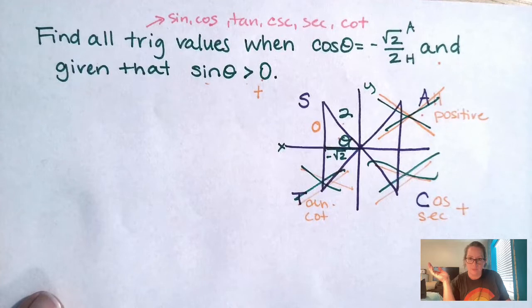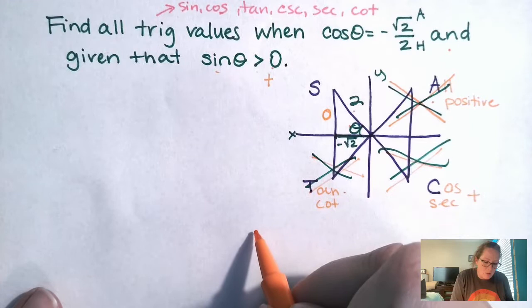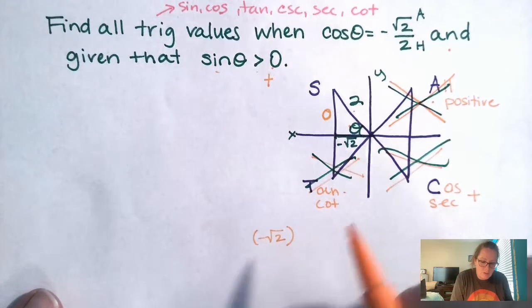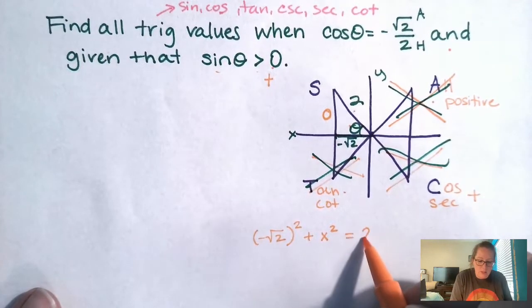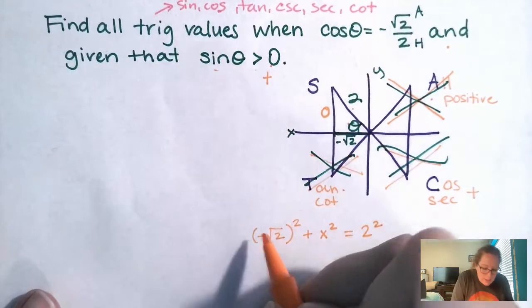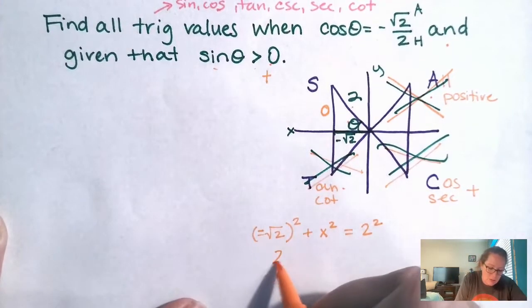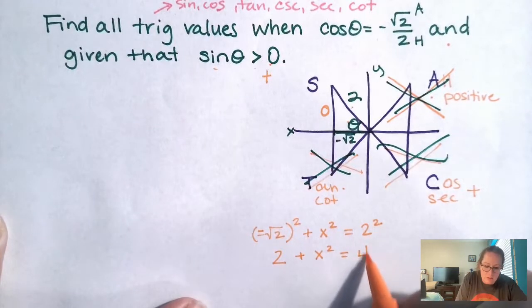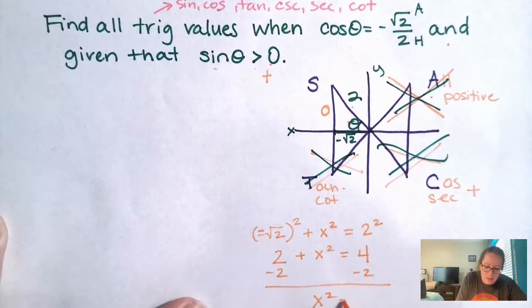We know two of three sides, so we can do Pythagorean theorem. So we're going to go, let's do negative root two squared plus, I don't know, squared equals hypotenuse squared. That does not look like a negative. Sorry, they're so close. So negative squared is positive. Square root two times square root two is two. So we get just two here. Two squared is four. So I'm going to subtract, subtract. X squared equals two.